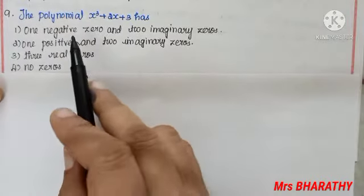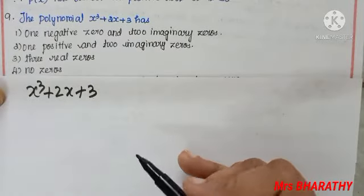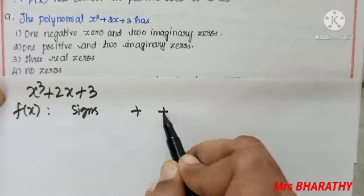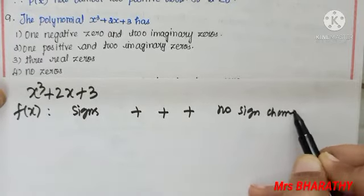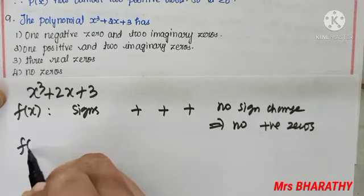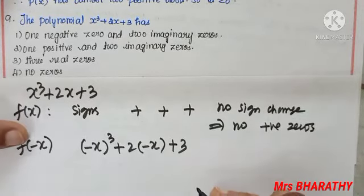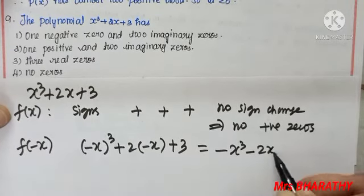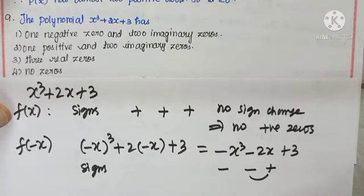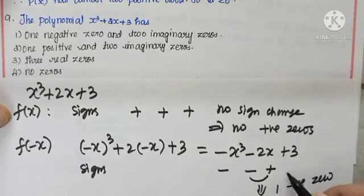Question number 9: for the polynomial x³ + 2x + 3, we analyze the number of zeros. The signs of f(x) are +, +, +, + — no sign change at all, meaning no positive zeros. Now find f(-x): (-x)³ + 2(-x) + 3 = -x³ - 2x + 3. The signs are -, -, +, giving one sign change, so there is at most 1 negative zero.